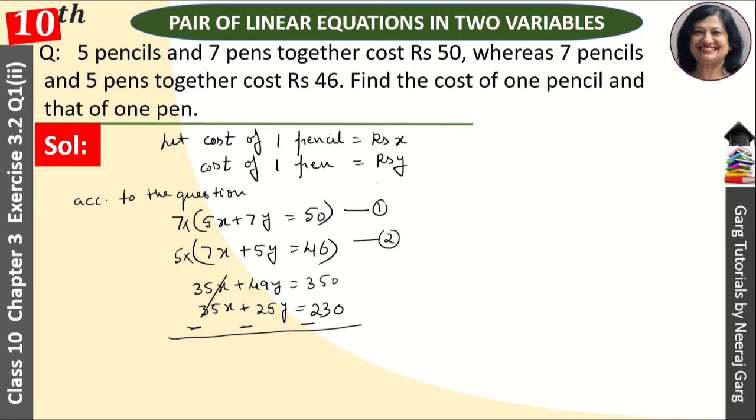When we subtract, 35x cancels. We get 49y minus 25y equals 350 minus 230, which gives 24y equals 120. Therefore, y equals 120 divided by 24, which equals 5.